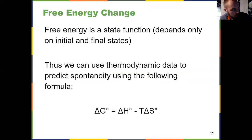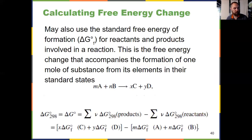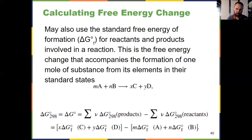Just like enthalpy and entropy, Gibbs free energy change is a state function — it depends only on the final and initial states. We can calculate the free energy change the same way we've done before for other thermodynamic variables: take that variable for the products multiplied by their stoichiometric coefficients, minus that variable for the reactants multiplied by their coefficients. We did this in chapter 5 for enthalpy, in video two for entropy, and now we can do it for Gibbs free energy.